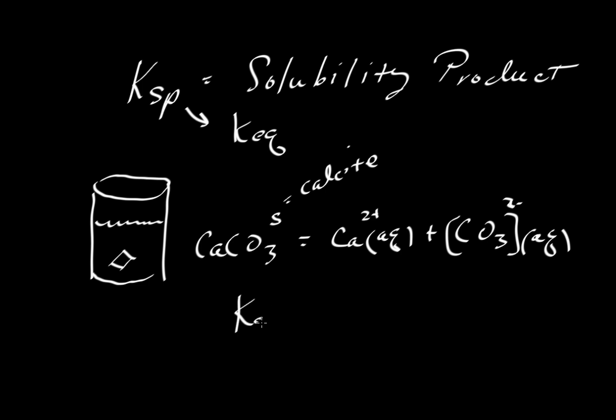So we can write an equilibrium constant where we take the products. The products are the calcium and carbonate ions. So concentration of calcium times the concentration of carbonate ion, 2-minus, also in aqueous solution.